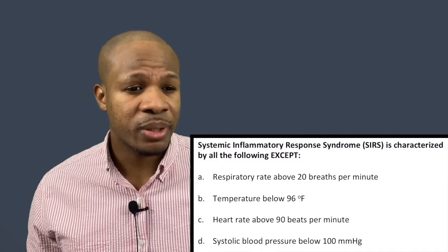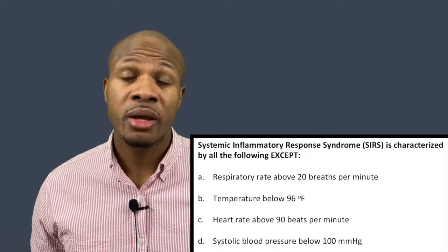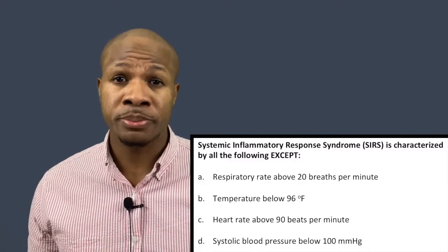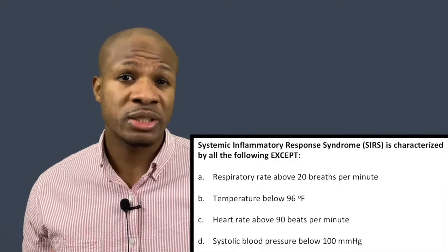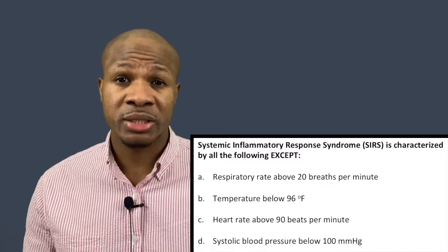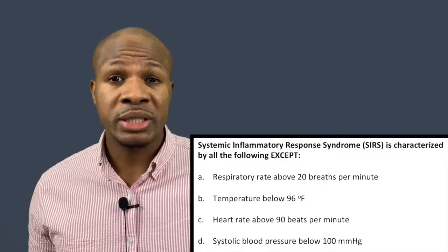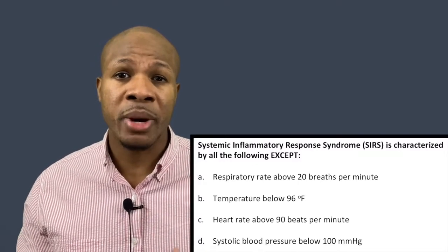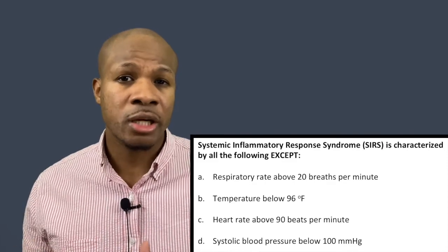Question number one states: systemic inflammatory response syndrome is characterized by all of the following except. We're basically being asked to identify all the characteristics associated with systemic inflammatory response syndrome and pick out the one that is not associated with SIRS. SIRS is a response syndrome — usually a response to distress, typically an infection — and it's a widespread immune response the body mounts to help fight off an infection or illness. You can almost think of SIRS as pre-sepsis.